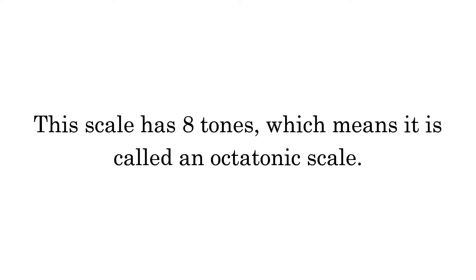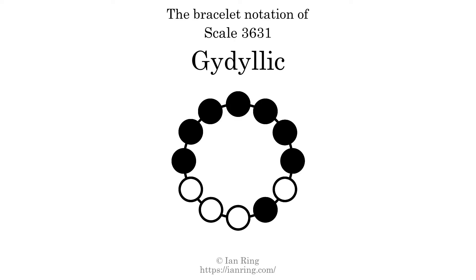This scale has 8 tones, which means it is called an octatonic scale. This is a bracelet notation diagram of scale 3631. The shaded circles represent tones that appear in the scale, and they are read clockwise, starting at the top.